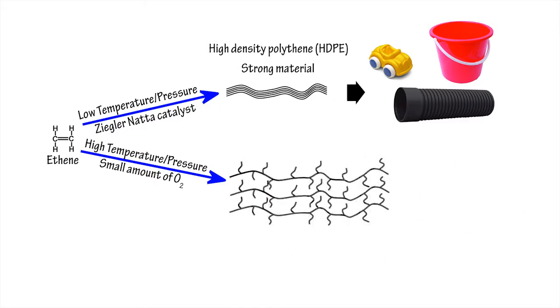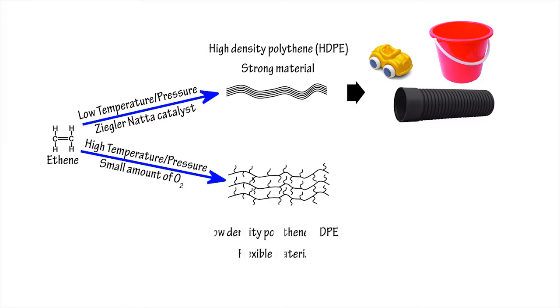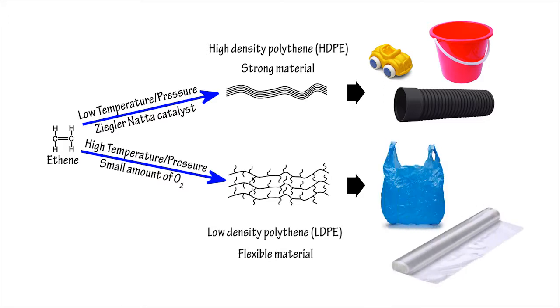Branched polythene forms low density polythene, a much more flexible material used to make cling film and plastic shopping bags.